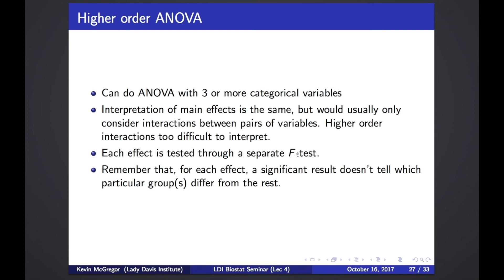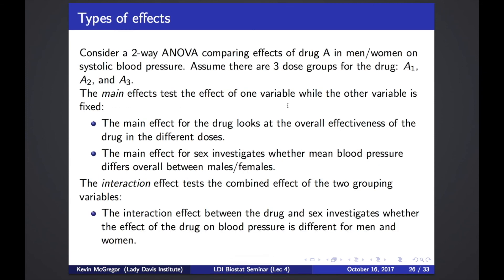We use the F test and investigate each effect through a separate F test. Remember that for each effect, a significant result doesn't tell us which particular groups differ from the rest. If we find a significant main effect for drug A in our example, it won't tell us which specific dose differs — just a general indication that dose has an effect on blood pressure.